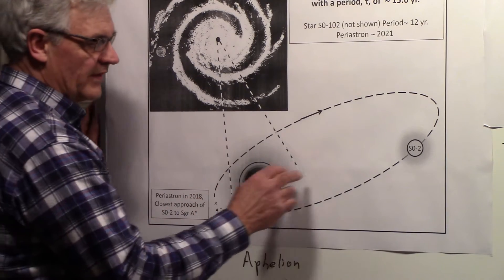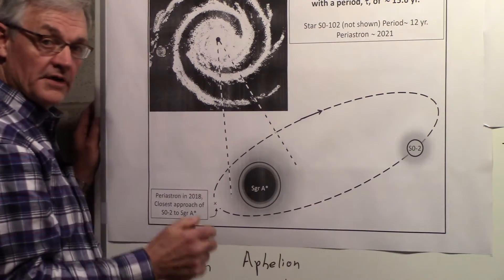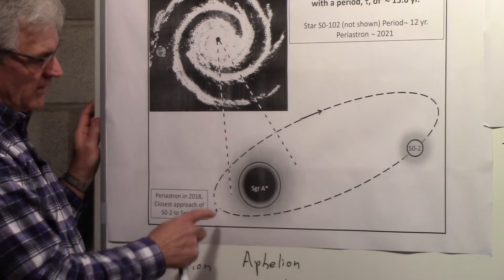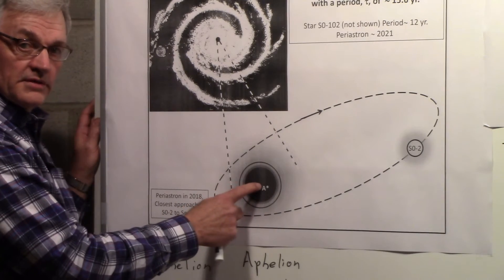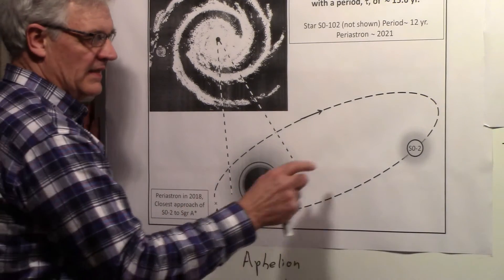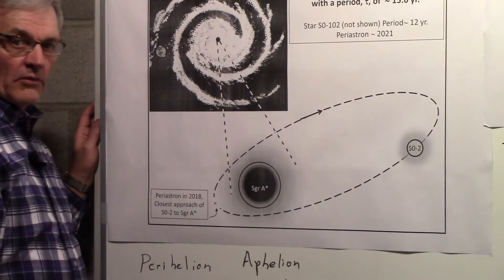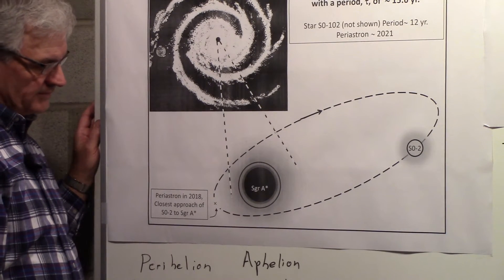We also want to find out what the velocity is when it's far away. So there are two velocities we're going to look at: one close to the supermassive black hole, and the second one far away from the supermassive black hole.